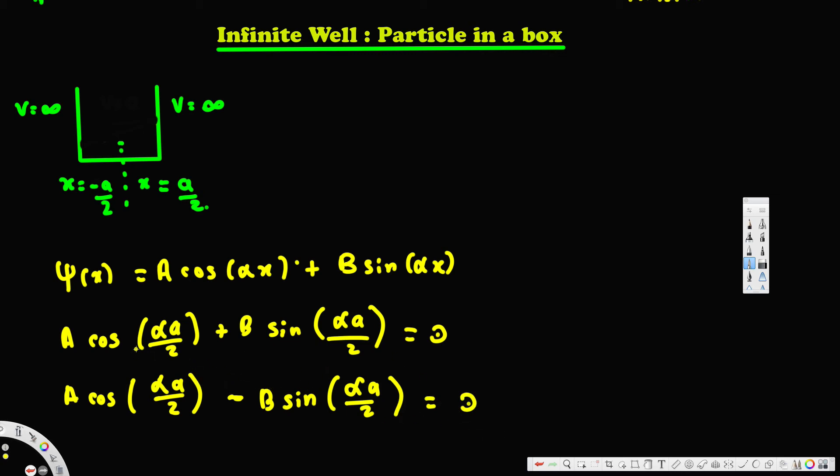So from this one, after we solve this, you can add these two together. When you add, B sine cancels and you will get 2A cos(αa/2).